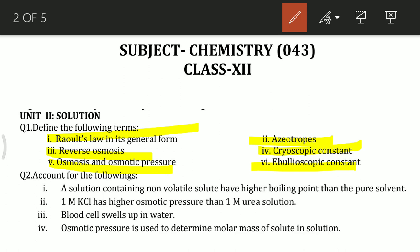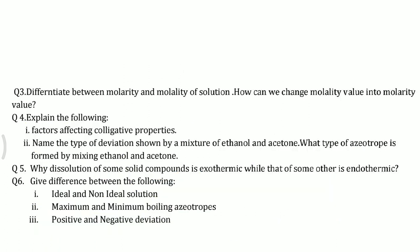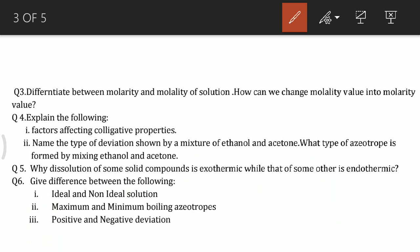Next are reason-type questions. A solution containing a non-volatile solute has a higher boiling point than the pure solvent — why? One mole of KCl has higher osmotic pressure than one mole of urea solution. Next, blood cells swell up in water — why? Also, osmotic pressure is used to determine the molar mass of a solute in solution. This type of question is very important for your examination.